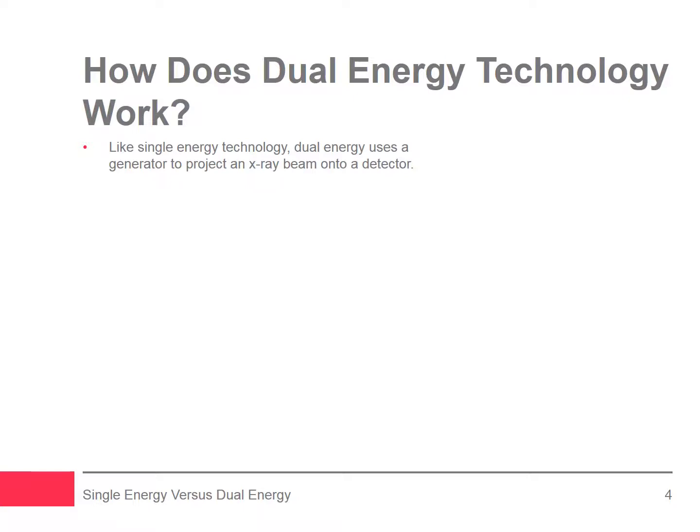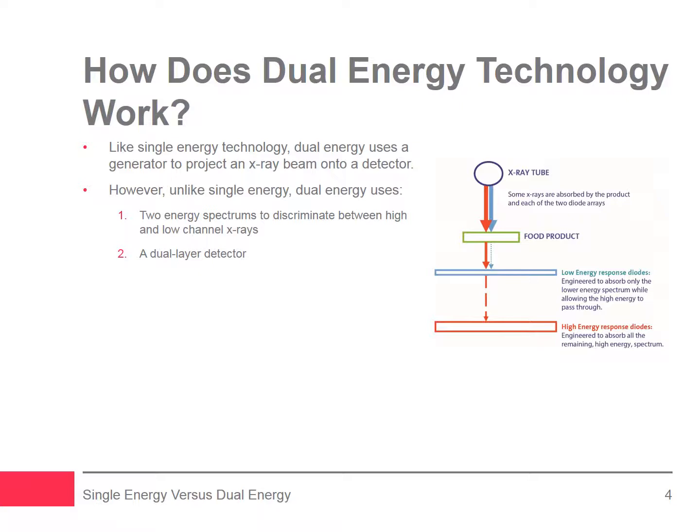Like single energy technology, dual energy involves using a generator to project an x-ray beam onto a detector and passing a product through the beam. However, dual energy diverges from single energy x-ray inspection because it uses two energy spectrums to discriminate between high and low channel x-rays, as well as a dual layer detector. The top detector is sensitive to lower energy and the bottom detector is sensitive to higher energy. The two detectors are separated by a small copper plate which filters out the low energy x-ray and only allows the high energy x-ray to pass through to the high energy detector. When an x-ray beam is projected through a product, some of the energies are absorbed while others pass through it — what gets absorbed and what passes through depends on the product's composition.